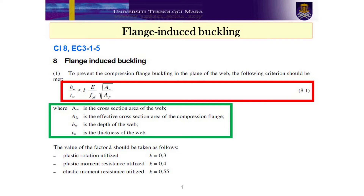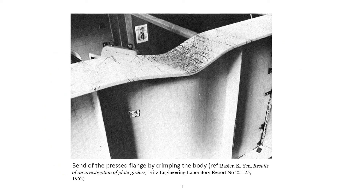The factor K assumes the following values: plastic rotation utilized is for class 1 flanges; plastic moment resistance utilized is for class 2 flanges; elastic moment resistance utilized is for class 3 or class 4 flanges. This figure shows an example of flange induced web buckling.